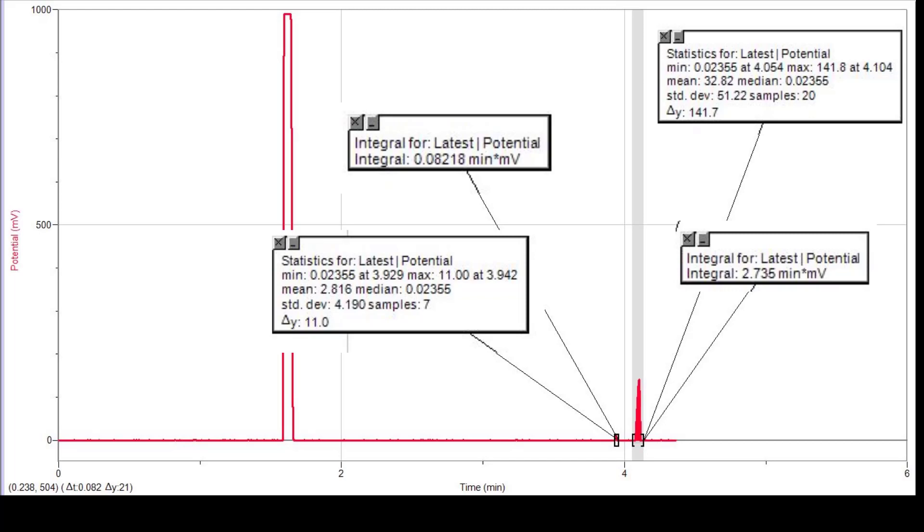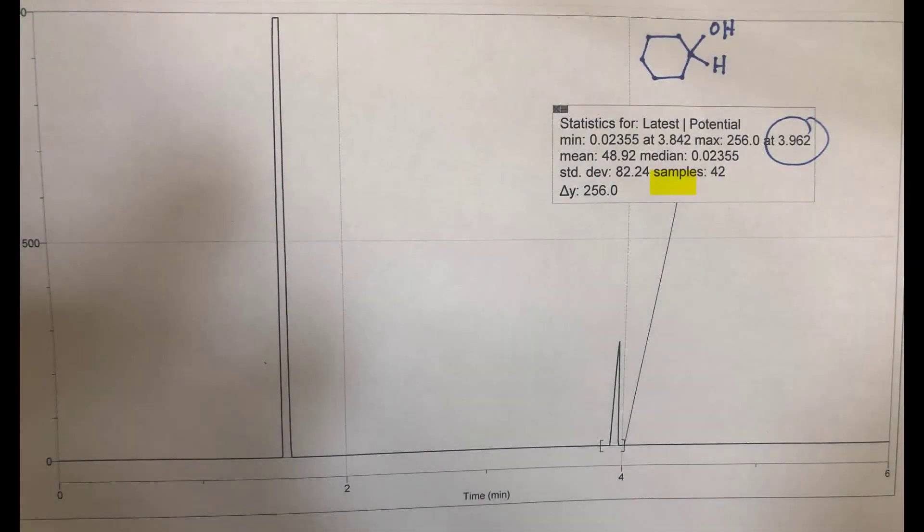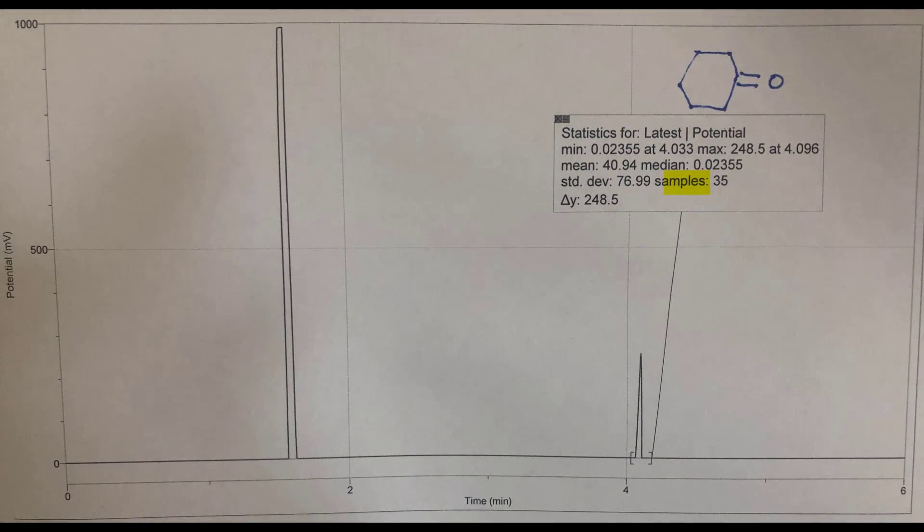Notice that there are two peaks, one big one and one small one. I'm also giving you the reference chromatogram of the cyclohexanol standard and the cyclohexanone standard. You'll need these retention times to identify the peaks in the previous chromatogram.